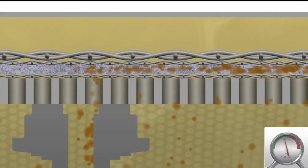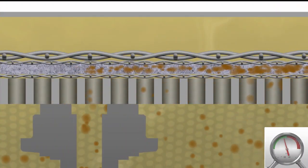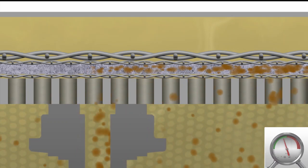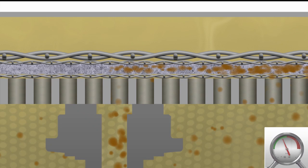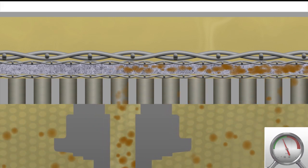The reject valve opens and the backwash pistons move linearly over the entire filter surface. Depending on the viscosity of the fluid, this process takes between 30 seconds and several minutes.